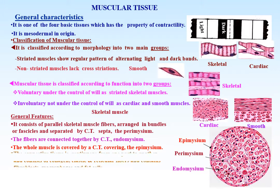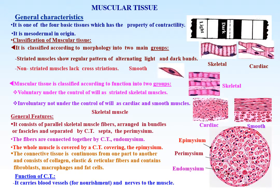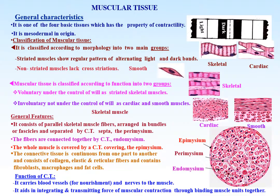The connective tissue, although given different names, is continuous from one part to another and consists of collagen, elastic, and reticular fibers, and contains fibroblasts, macrophages, and fat cells. Connective tissue carries blood vessels for nourishment and nerves to the muscles. It aids in integrating and transmitting the force of muscular contraction by binding the muscle units together.